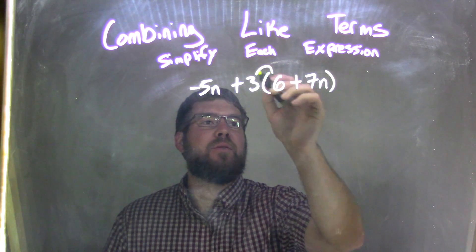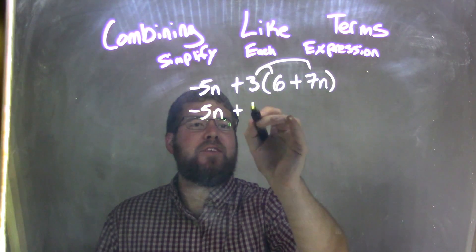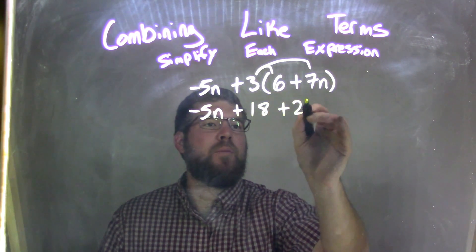So 3 times 6 and 3 times 7n, so negative 5n comes down, 3 times 6 is 18, and then 3 times 7n is 21n.